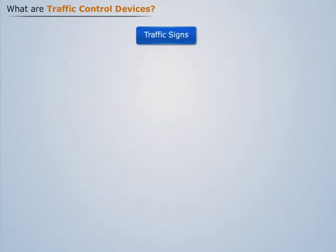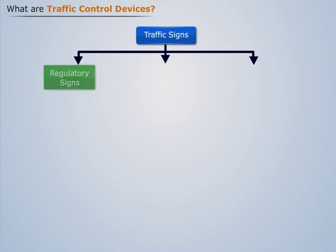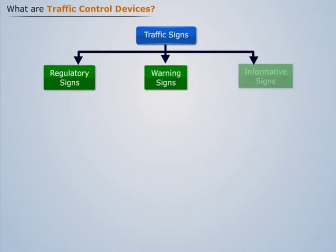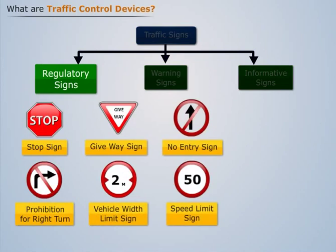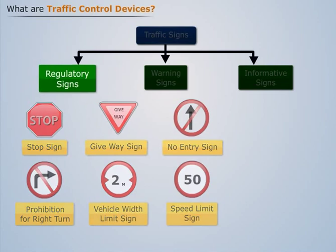Now let us discuss the wide variety of traffic signs. They can be classified into three main categories. Regulatory signs are the mandatory signs which require the driver to obey the signs for the safety of other road users. Otherwise, the control agency has the right to take legal actions.